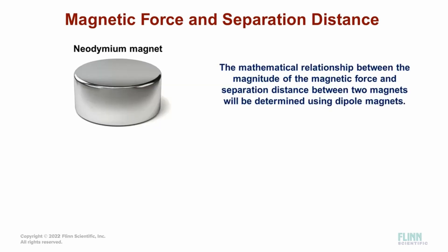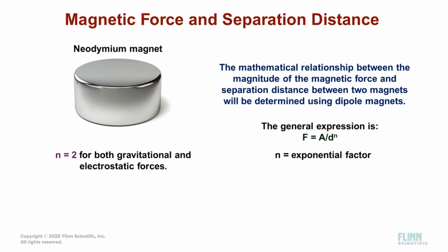In this experiment, the mathematical relationship between the magnitude of the magnetic force and the separation distance between two magnets will be determined using dipole magnets. The general expression can be written as F equals A over d to the n, where n is the exponential factor. For both gravitational and electrostatic forces, this factor is equal to 2.